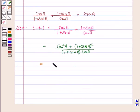So this is equal to cos square A plus 1 plus sin A whole square will be 1 plus sin square A. We're using the formula of A plus B whole square which is A square plus B square plus 2AB.